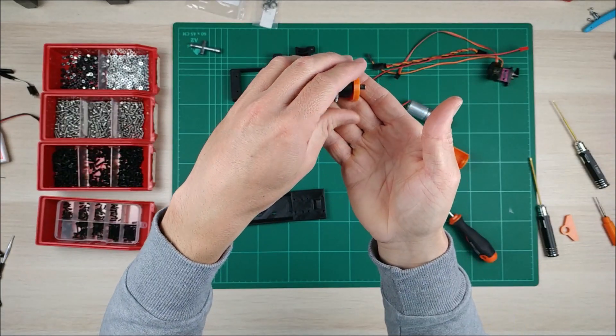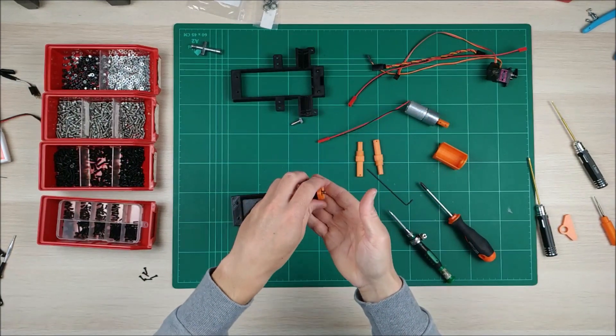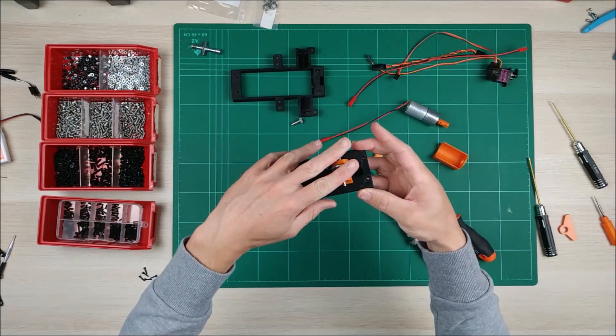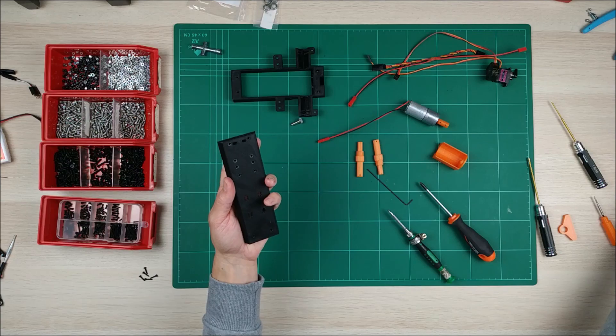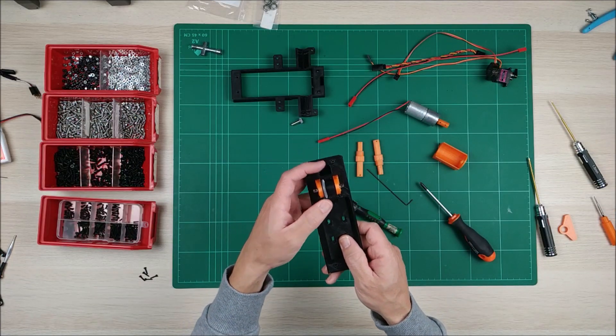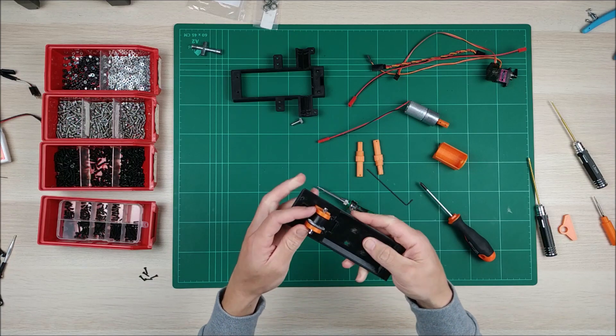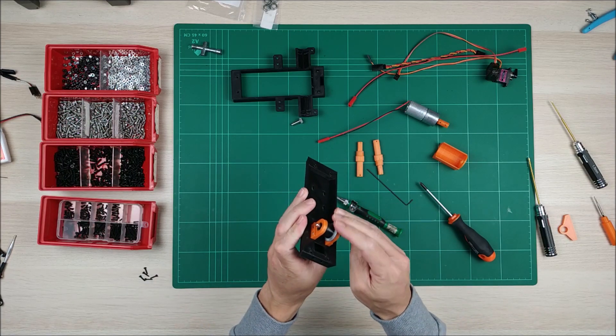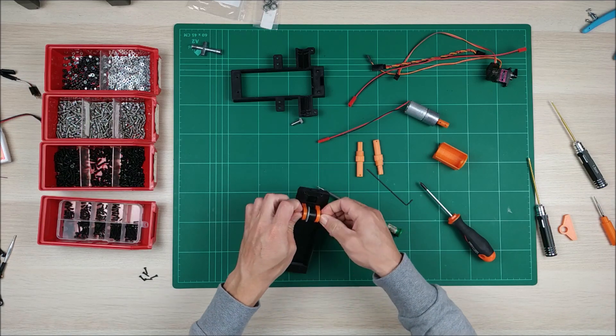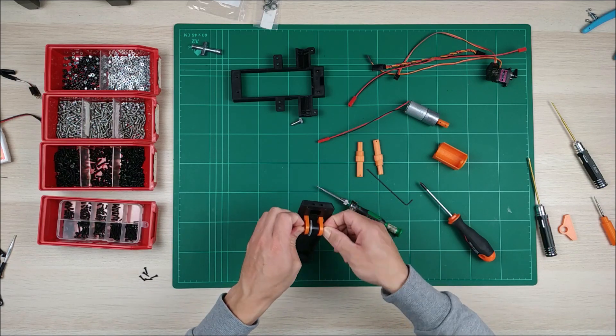As you can see here, now we can mount it here. And now I'm going to use M3 16mm screws. As you can see, now we have something. That's the first step. This rotates because of the bearings and this should rotate.